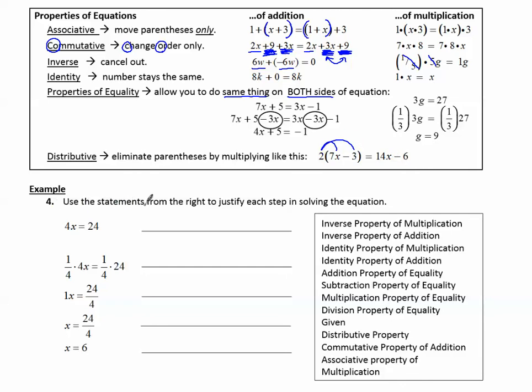Example 4, use the statements from the right to justify each step in solving the equation. The first statement will be given. Nothing happened to have this equation except it was given to us. In the second step, we needed to make the 4 go away, so notice what changed is we're multiplying by 1 fourth on both sides of the equation. Properties of equality is when we do the same thing on both sides of the equation. So we're looking for a property of equality where we multiplied on both sides. That's the multiplication property of equality.